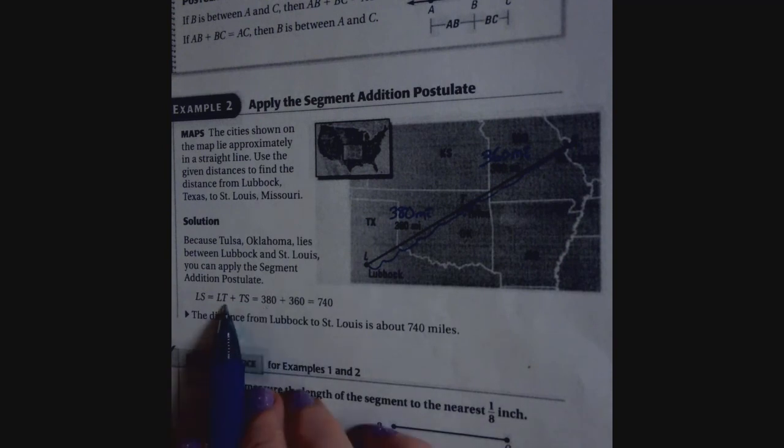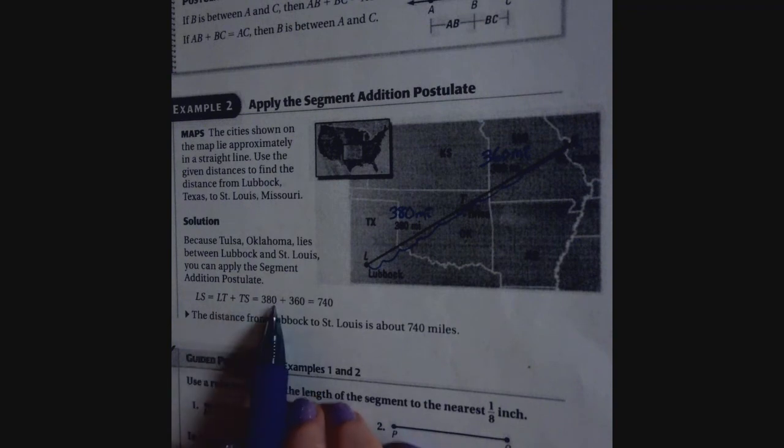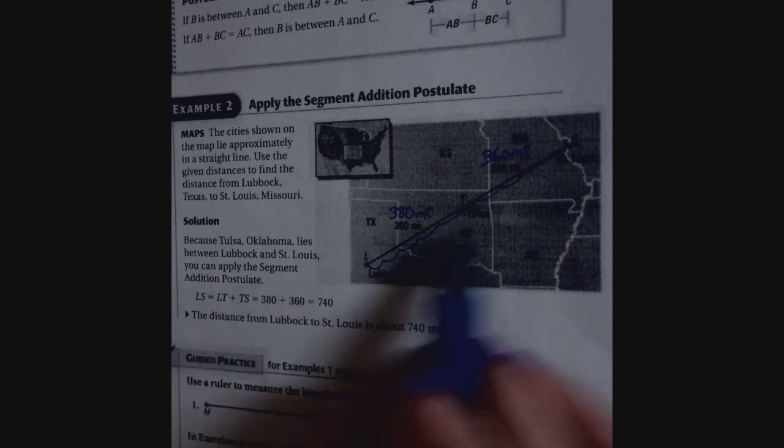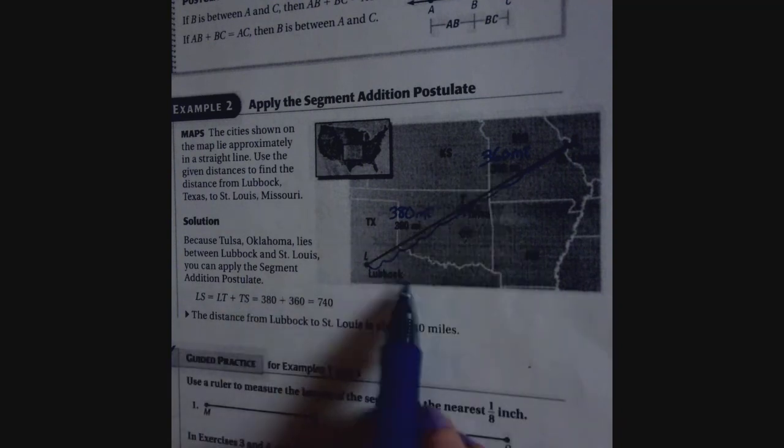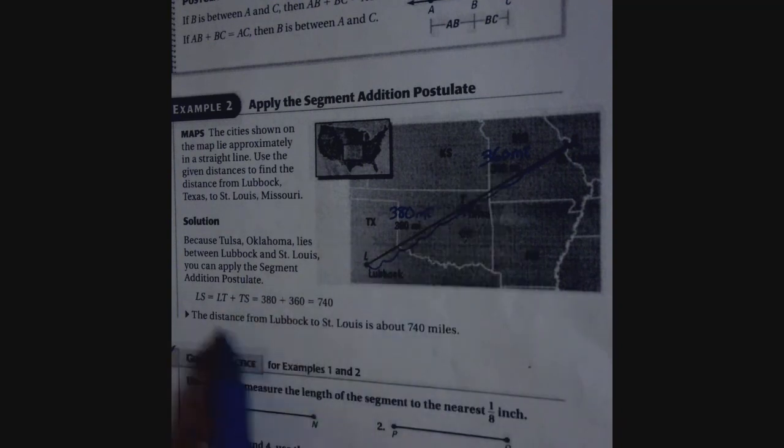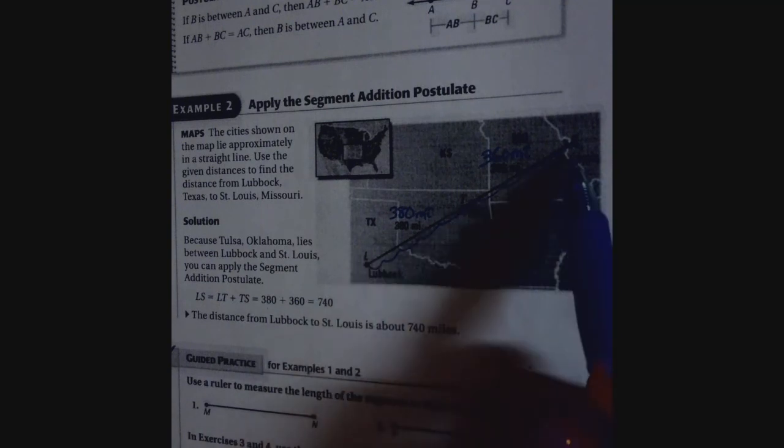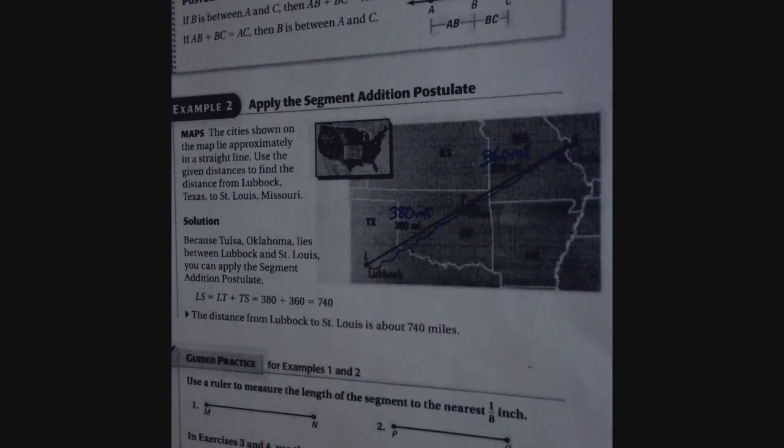So basically you're going to add the 380, plug it in, from Lubbock, Texas to Tulsa, Oklahoma is 380, plus from Tulsa, Oklahoma to St. Louis, I put up here, is 360. If you add them together, the distance from Lubbock to St. Louis is about 740 miles. All right, so you can see it's not difficult.